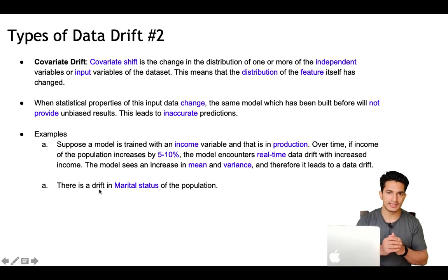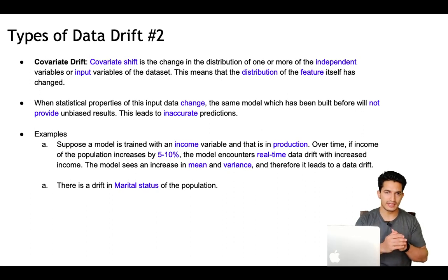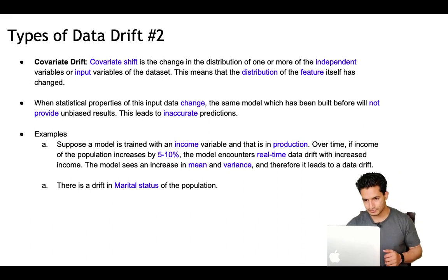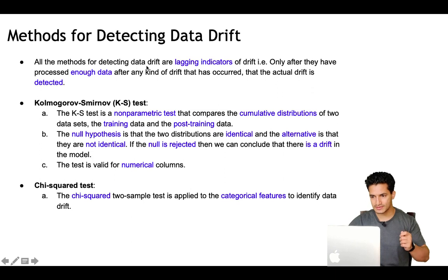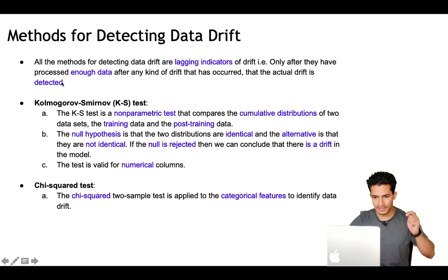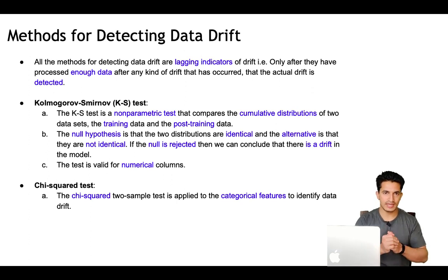Similarly, if there is a drift in the marital status of the population — many people get married, divorced, or many childbirths happen — the marital status changes and that could drift the data, resulting in model performance degrading. One important thing to note is that all the methods for detecting data drift are a lagging indicator of drift. That is, only after the drift has happened and the method has processed enough data can any kind of drift be detected. So it is not proactive — it is more reactive.